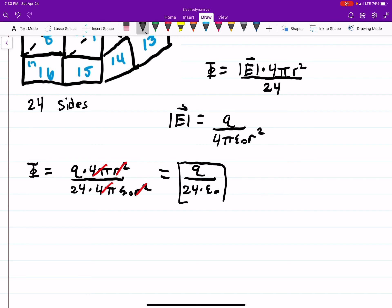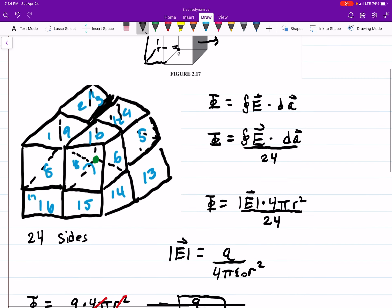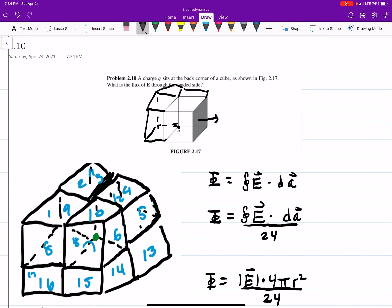And this is the flux that will go through any one side of this bigger cube. So the real trick to this is seeing that because the charge is in a corner and not perfectly in the center, we have to create an imaginary bigger cube where Q is at the center.